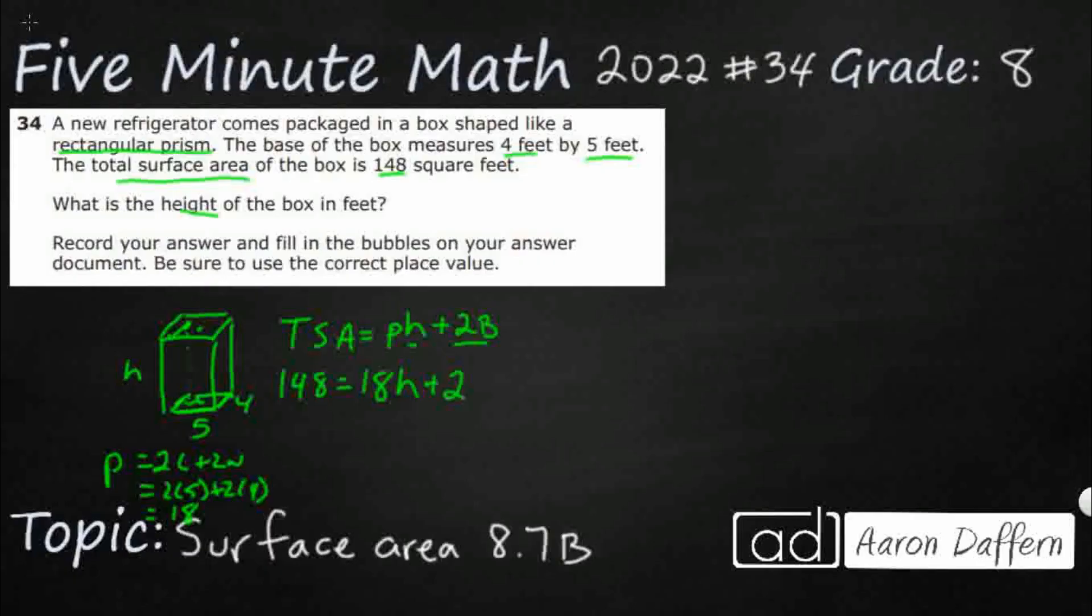So I've got 18 times this height, which is what we're looking for, plus 2b. All right, so that base is going to be the area of the base. So that's just going to be base times height. So that's 4 times 5. All right, so that equals 20. All right, so that's equals 2 times 20. So look at that. I've got everything I need except for this H.